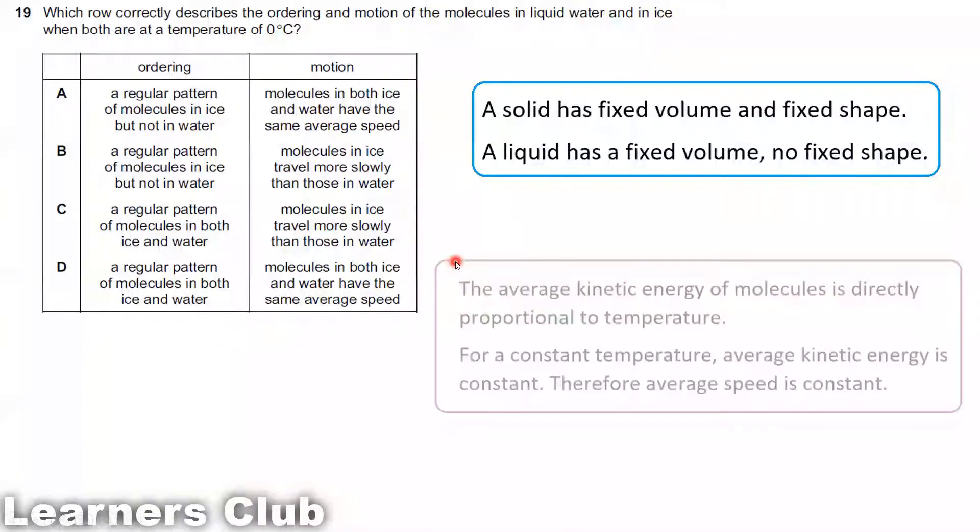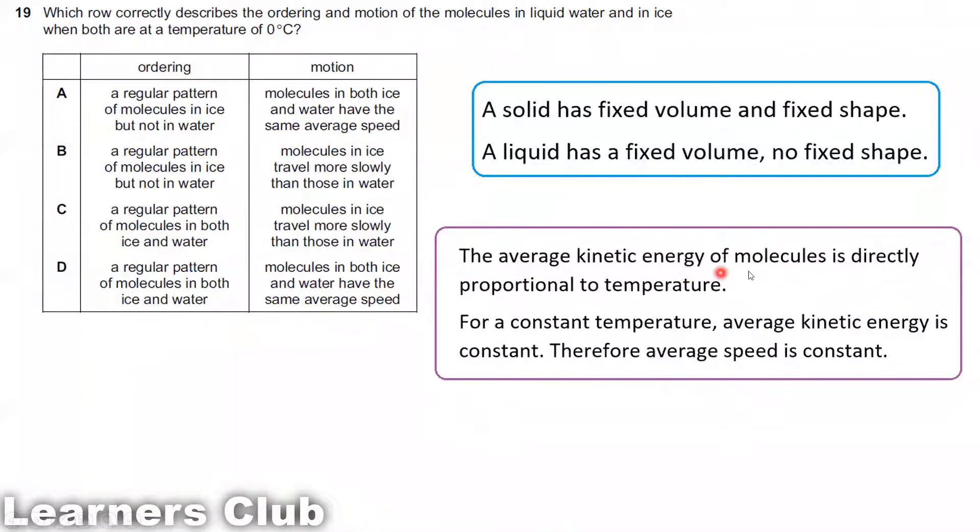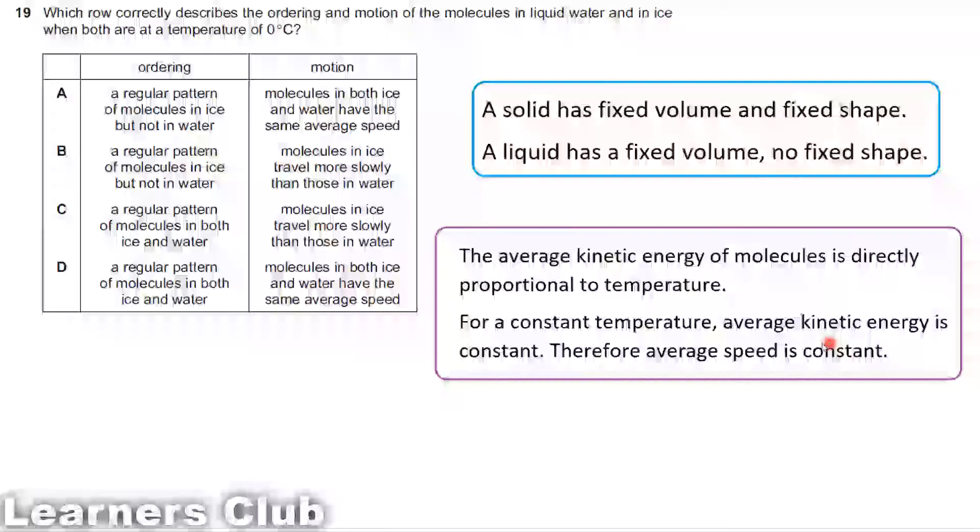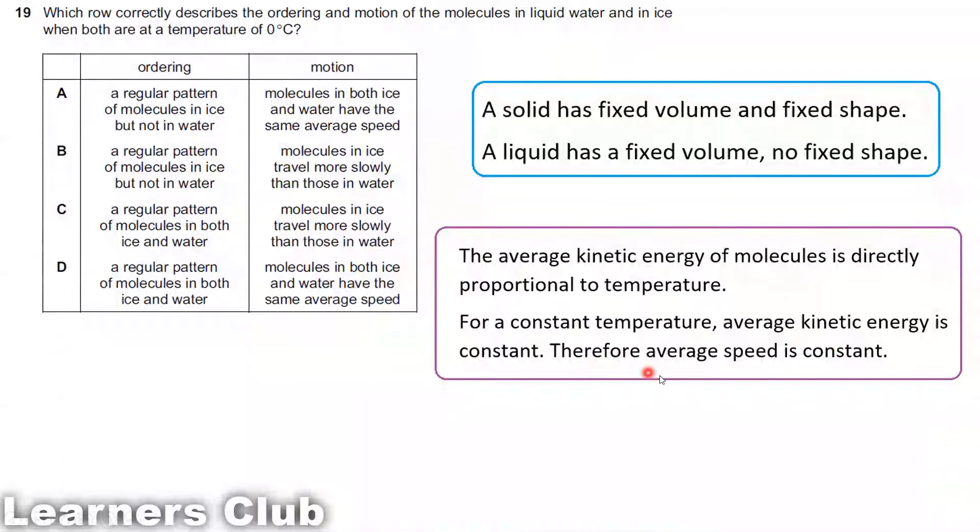We already know the average kinetic energy of molecules is directly proportional to temperature, which means as temperature increases the molecules gain energy. As a result, their kinetic energy is increased. But for a constant temperature there is no change in the kinetic energy because the kinetic energy will remain constant. Therefore average speed is constant.